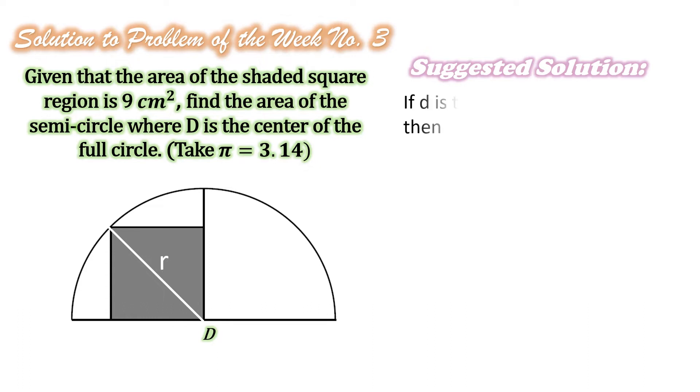Now, if D is the diagonal of the square, then other than the well-known formula for the area of the square, we have area of the square is equal to D squared over 2.